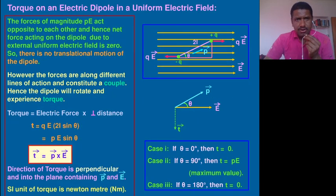Torque on an electric dipole in a uniform electric field. Here the expression for torque is given. The torque is nothing but electric force into the perpendicular distance. Electric force is given by Q into E—that is charge into electric intensity—and perpendicular distance is given by twice L sine theta.